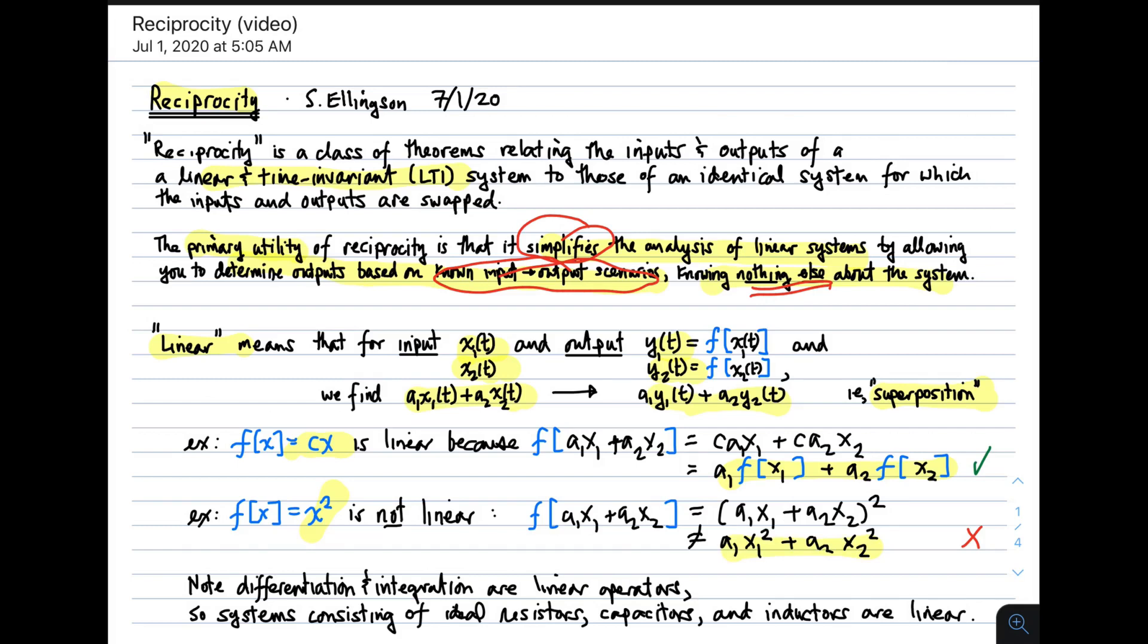Maxwell's equations are linear and time-invariant as long as the materials are linear. Note that differentiation and integration both are linear operators. So systems consisting of ideal resistors, capacitors, and inductors are linear as long as those devices and the materials comprising them are linear. We continue that list to include antennas and other commonly encountered passive devices.